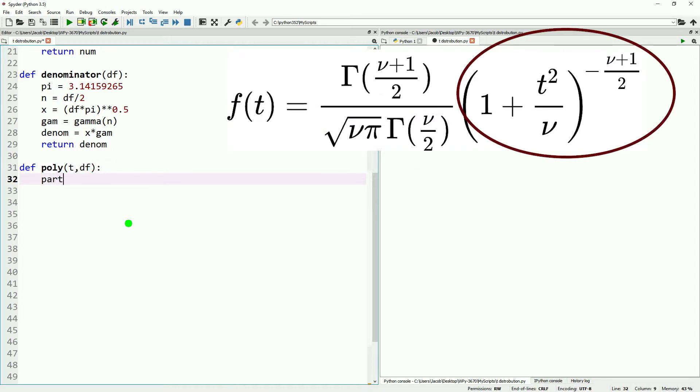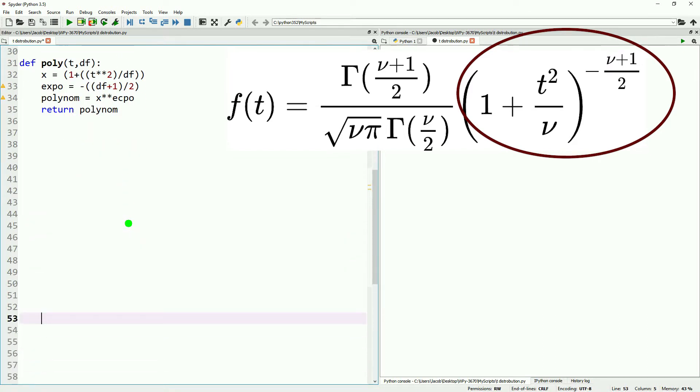Lastly, we need a function for the right hand section of our probability distribution function. This takes two variables: t and degrees of freedom. We'll break this into base (1 plus t squared divided by degrees of freedom) and exponent (negative degrees of freedom plus 1 divided by 2), then return x to the power of our exponent.